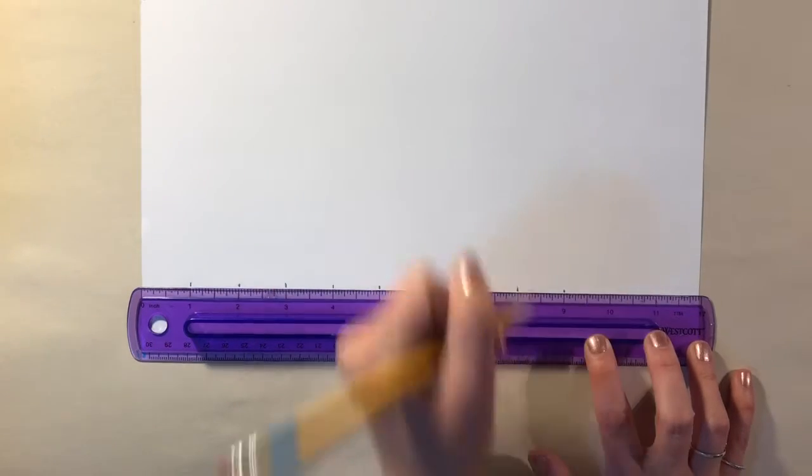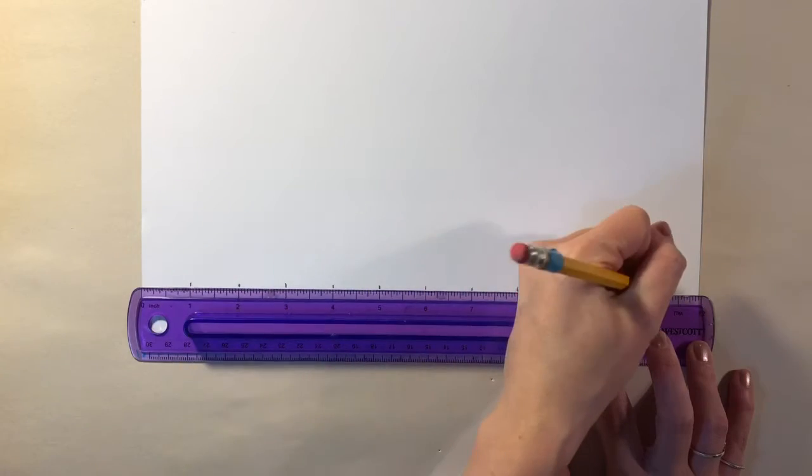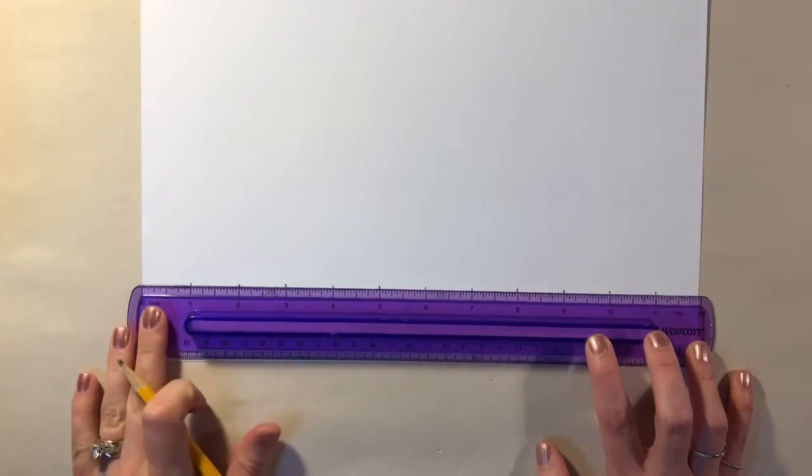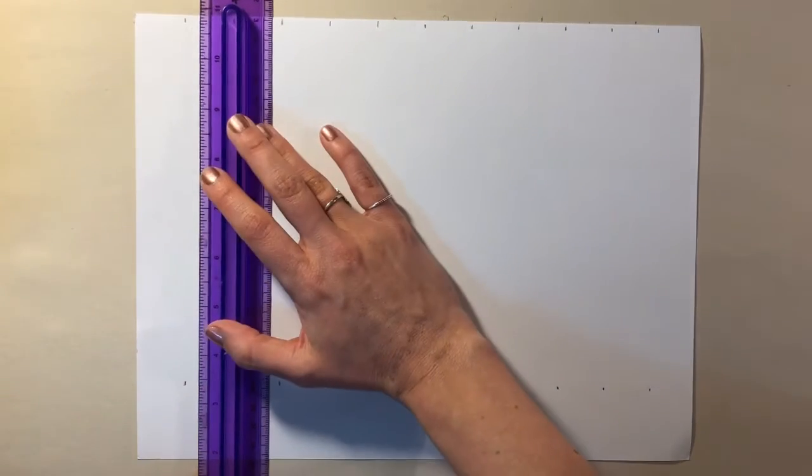This helps me make sure that my lines line up perfectly with the ruler and that they don't become slanted or off just a little bit. Once you have your tick marks at the top and the bottom of your page, you're gonna take your ruler and match it up with each one of those.